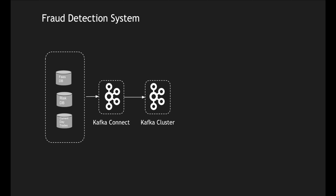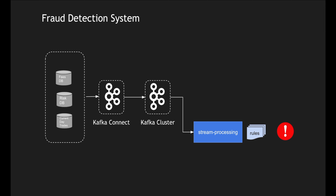Kafka Connector will help in copying all the messages and pushing them into a Kafka topic. The beauty of using Kafka as an intermediary is that I can use a custom-built process — maybe a Spring Boot application — to do stream processing, apply rules, and detect fraud. I did not do any code change to my fees, risk, or trade microservices; I just used Kafka Connect to copy their messages and publish them into the Kafka cluster.